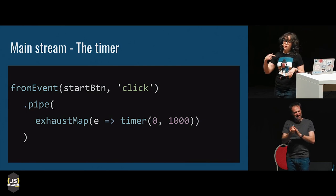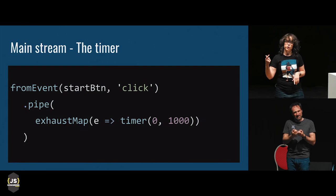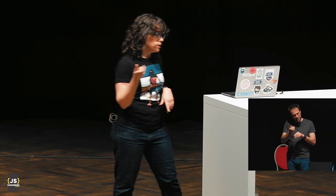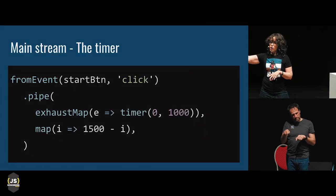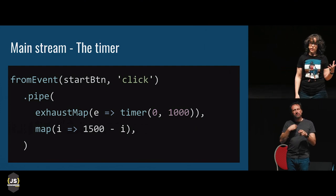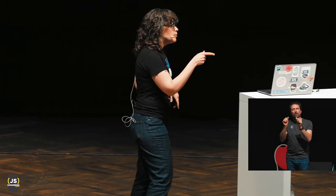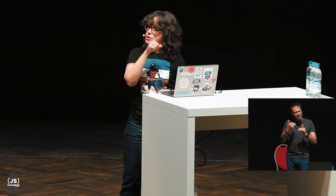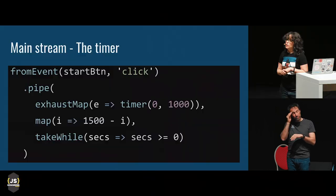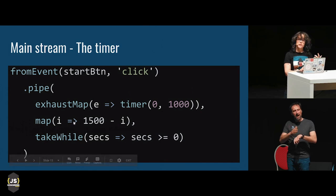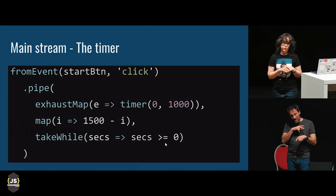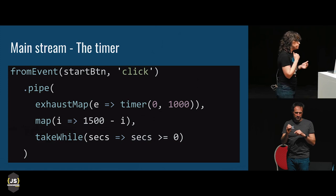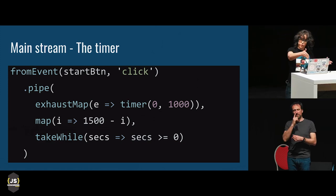Now I have a stream that emits every second, and it's emitting these incrementing integers. I can use that to calculate how many seconds are left by subtracting that number from the total number of seconds on my timer, which is 1500, giving me the number of seconds left. Further down my stream, I can use the map operator again to format it into the display value I want. I'm also going to tell this stream when to stop using the takeWhile operator — it only emits values from this stream so long as they are bigger than or equal to zero. This is what's going to stop my timer when it hits zero. And this is it — my timer stream is done.